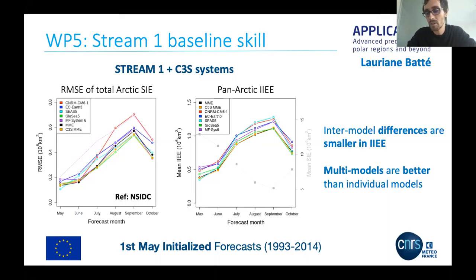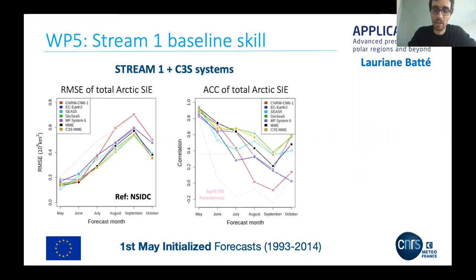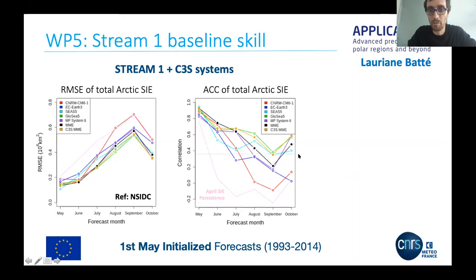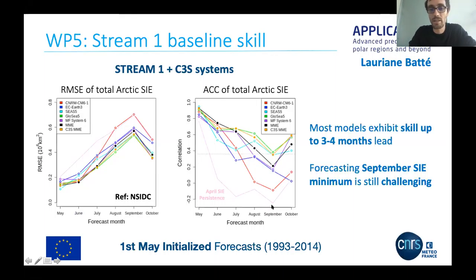Loriane has also looked at the anomaly correlation coefficient and compared it with the skill you would get with April persistence in sea extent. All the models beat persistence clearly and all of them show some significant skill for up to three to four months, all the way to August — this would be the threshold of significance at the 95% confidence level. However, we do see that September models are actually struggling to show predictive skill. So maybe we cannot expect enough information in our systems to predict what the sea ice extent will be in the Arctic in September — something we hope to improve in the stream-two experiments.